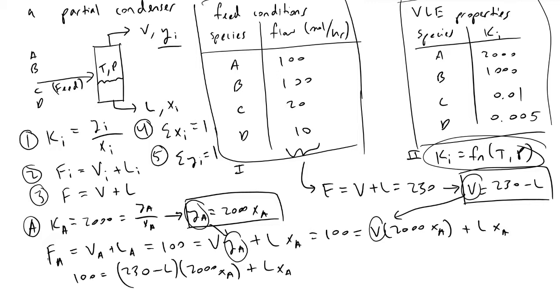If we combine like terms and simplify algebraically, we arrive at 460,000 times x_a minus 1,999 times L times x_a.